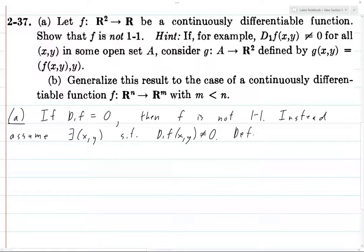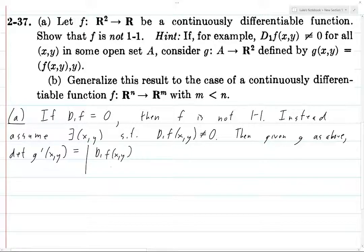So anyways, define g(x,y) as in the problem statement, so it's going to be f(x,y) and then y. So then given g as above in the problem statement, what we're going to have is we can compute the determinant of g'(x,y). So this is going to be the determinant of the matrix d₁f(x,y), d₁y, and then d₂f(x,y), and then d₂y.